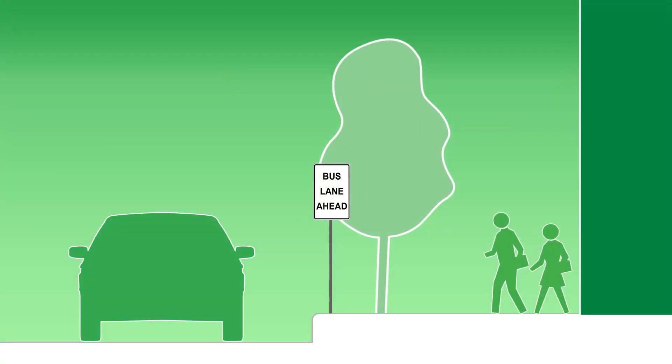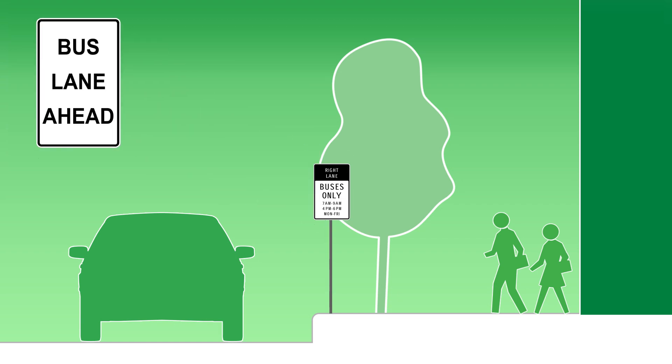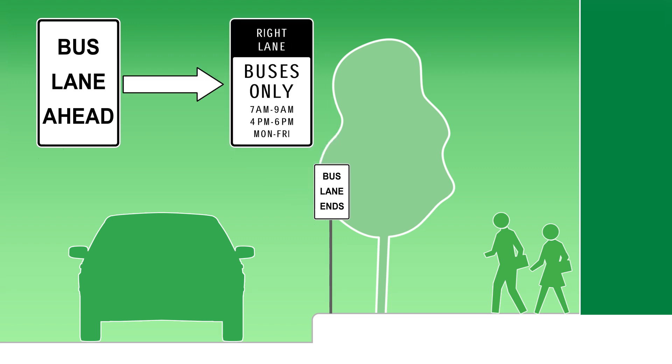Signs will be placed in advance of bus-only lane designations, communicating a bus lane is ahead. There will be a sign at the start of a bus-only lane stating which hours the bus-only designation is in effect. There will also be a sign at the end of a bus-only lane. At this point, all lanes are available for all traffic.